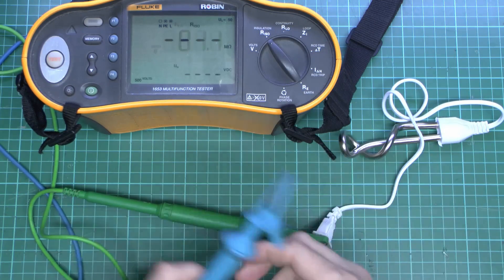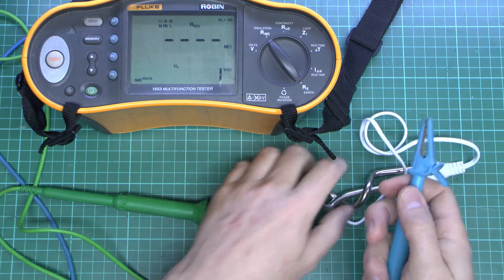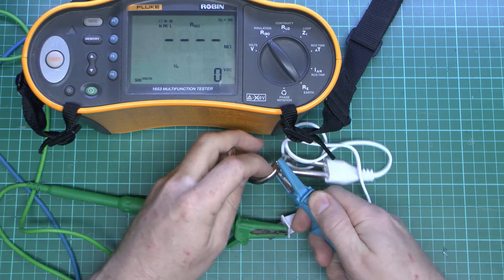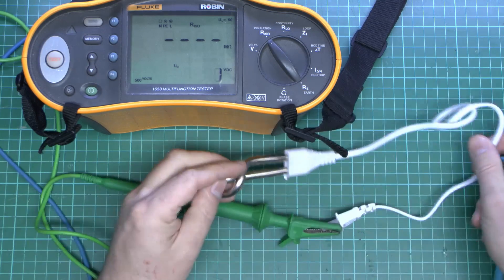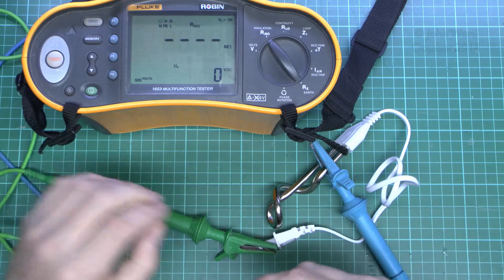Now we'll also check the insulation resistance between the prong here and the actual casing of the thing here. Now we only have to do this really on one of them because, as we've just seen, there's an 80 ohm resistance between the two prongs there. Now we should expect many megaohms here.